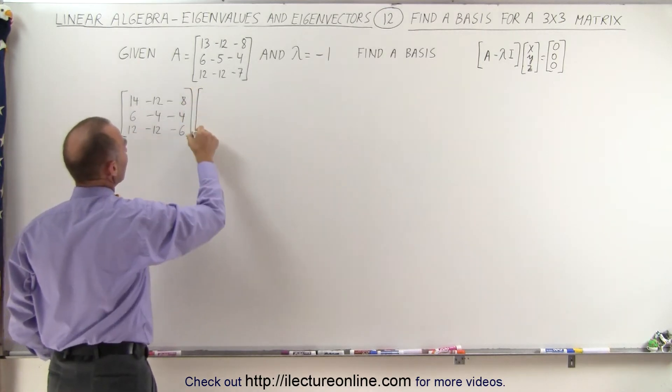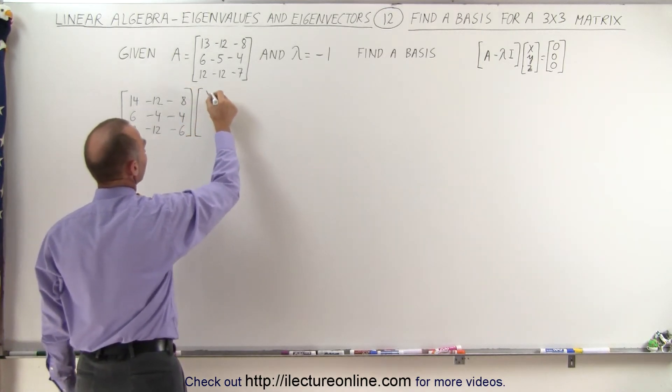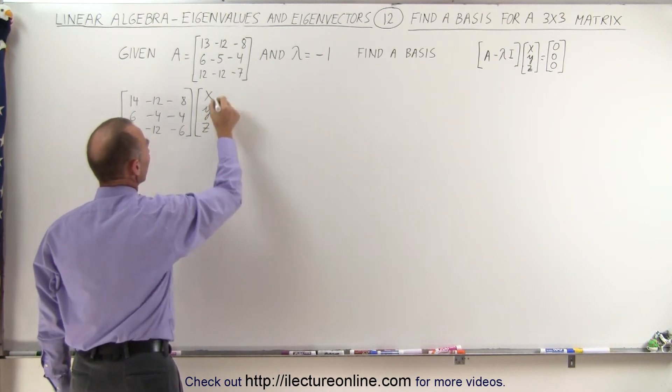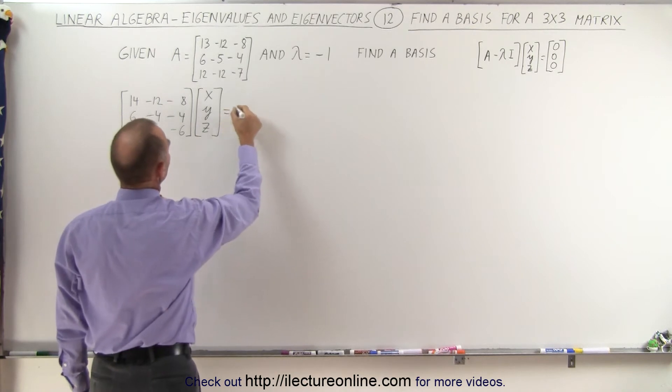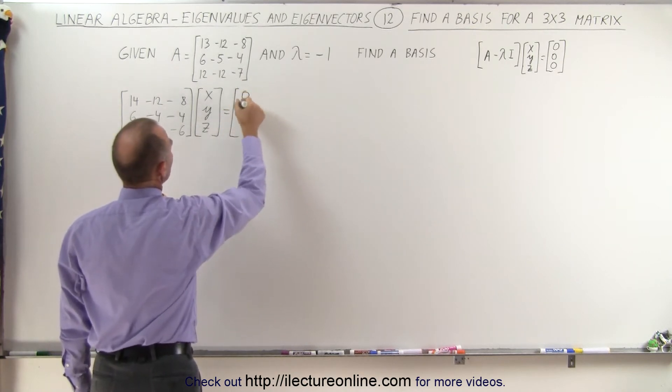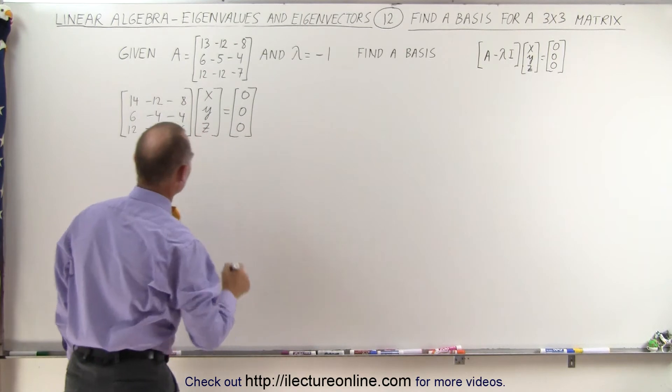We're going to multiply that times the vector we're looking for, the eigenvector x, y, and z. Of course, you could use x1, x2, x3, whichever you prefer. I tend to prefer x, y, and z, and 0, 0, 0 for the zero vector.